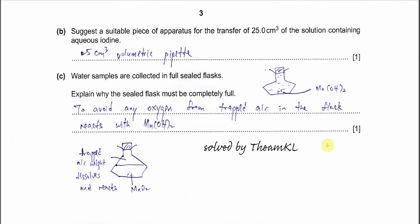Part b: Suggest a suitable piece of apparatus for the transfer of 25 cm³ of the solution containing aqueous iodine. Whenever we need to transfer a specific volume of solution — 10 cm³ or 25 cm³ — we use a pipette. The answer is a 25 cm³ volumetric pipette.